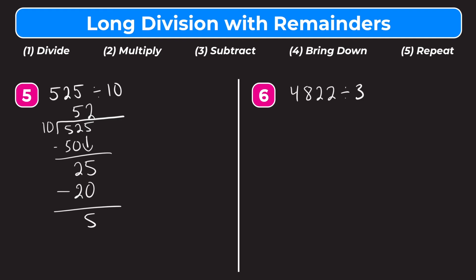Step 4 would be bring down, but we've gone all the way to the right in our dividend — there's nothing left to bring down. Since we are left with 5, that becomes our remainder. We write R5. The answer to 525 divided by 10 is 52 remainder 5.